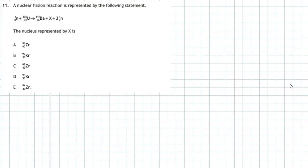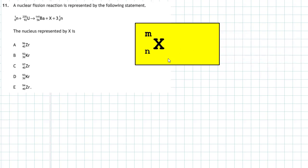Question 11 from Section 1 of the 2018 Higher Physics examination. A nuclear fission reaction is represented by the following statement, and we're given the nucleus represented by X as one of five choices. To solve this, we need to understand nuclear notation: X is the chemical symbol, the top number M is the mass number — that is, the number of protons plus neutrons — and the bottom number is the atomic number.